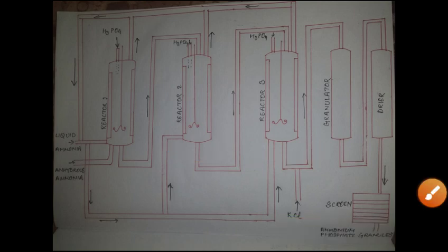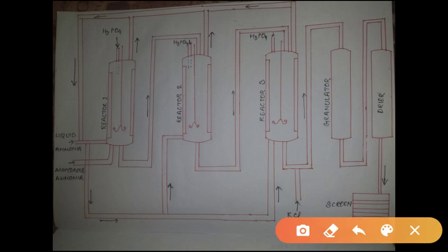Mono ammonium phosphate is present over here. It can be further dried and used as a fertilizer, but if we need a fertilizer of higher nitrogen content, that is diammonium phosphate, we need to proceed to two more processes with reactor 2 and reactor 3. In reactor 2, the slurry which we get from reactor one is sent, more phosphoric acid is added, and more anhydrous ammonia is sent to it.